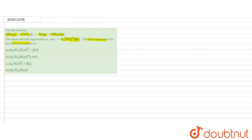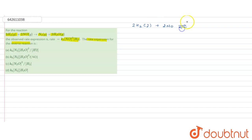For the reverse reaction, the overall equilibrium reaction is: 2 moles of H2 (gaseous) reacting with 2 moles of NO (gaseous) giving N2 (gaseous) and 2 moles of H2O (gaseous). This is an equilibrium reaction.